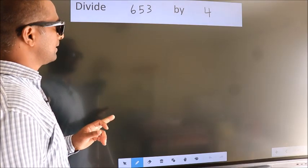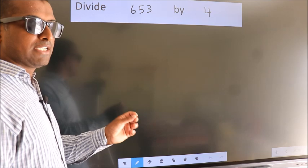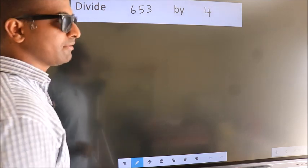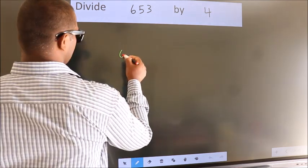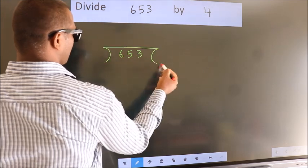Divide 653 by 4. To do this division, we should frame it in this way. 653 here, 4 here.